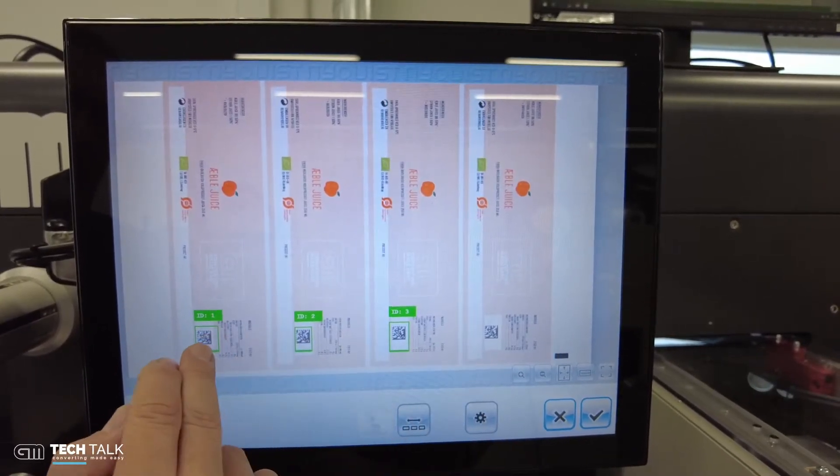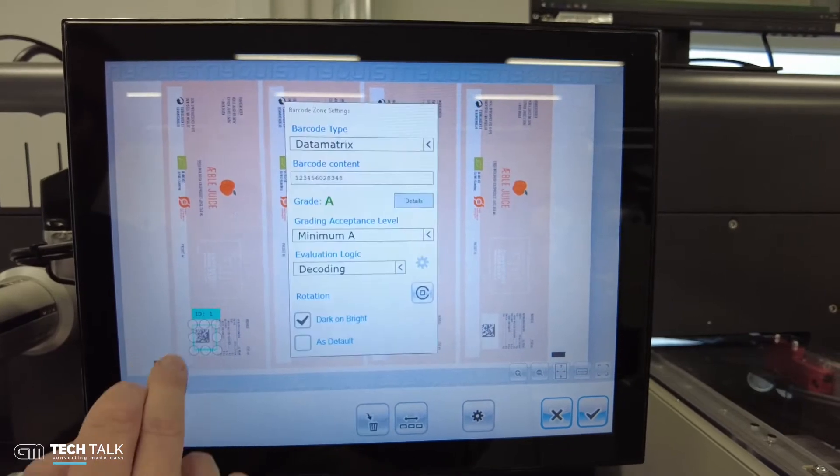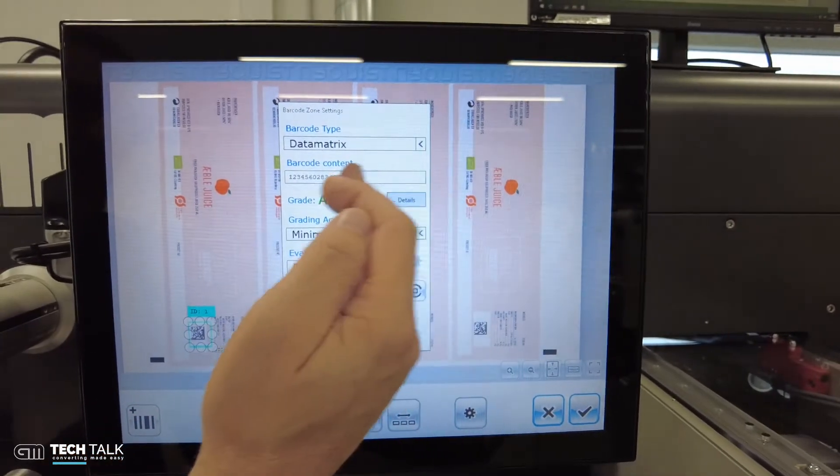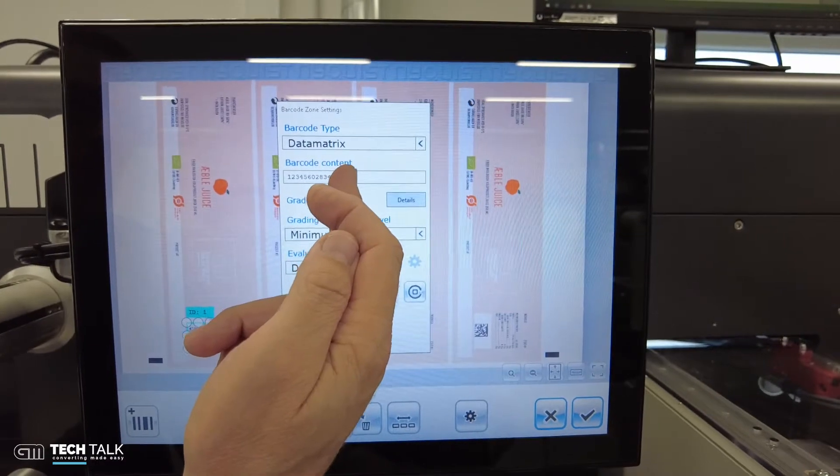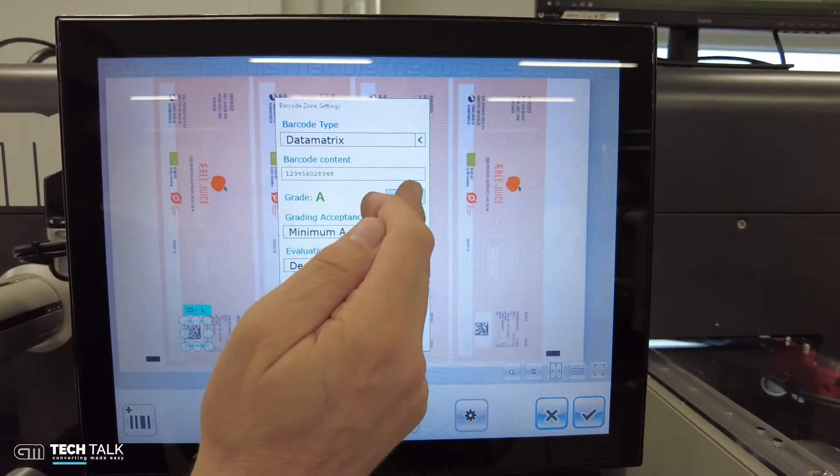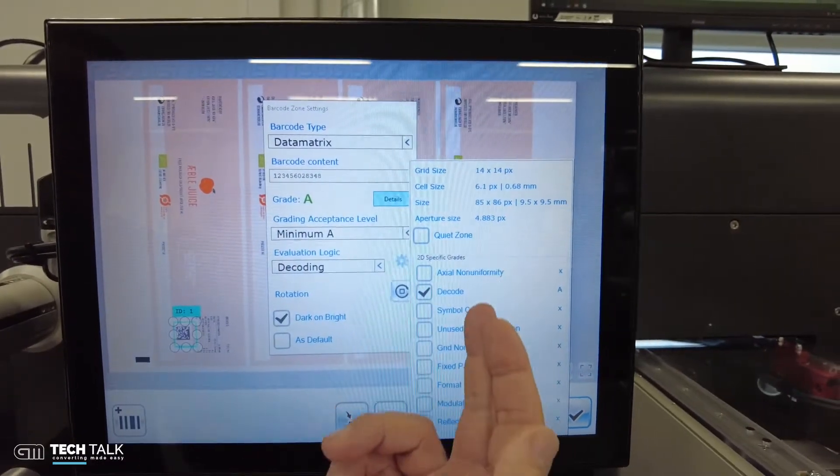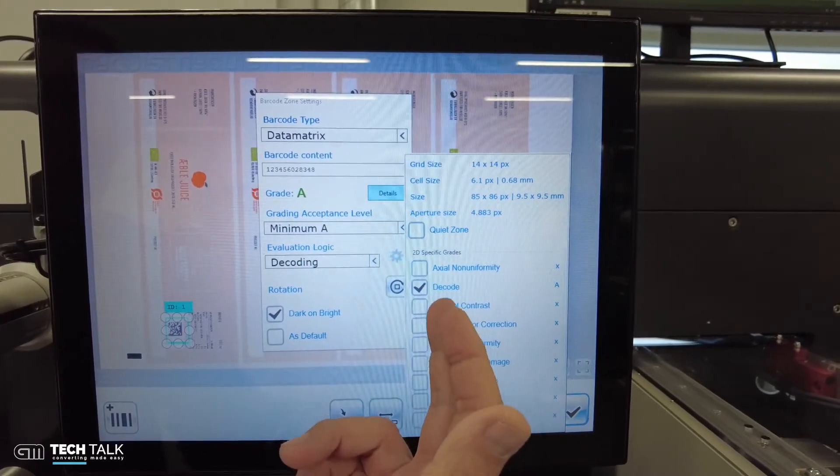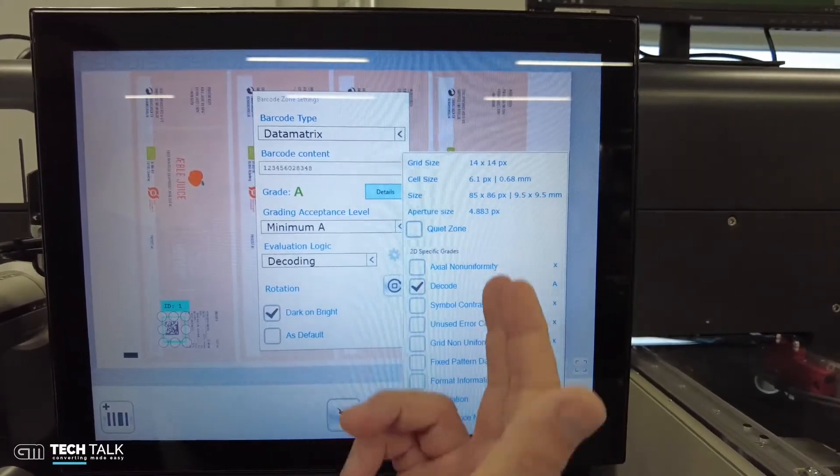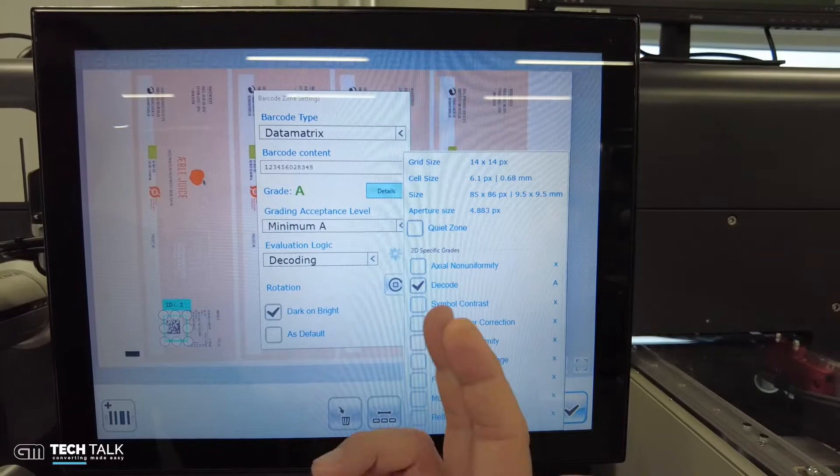Now coming more into details, if we go to this first barcode we can see immediately the content of this barcode and we can tell the system if it should simply decode this code or if we do additional analysis and give also a grading result.